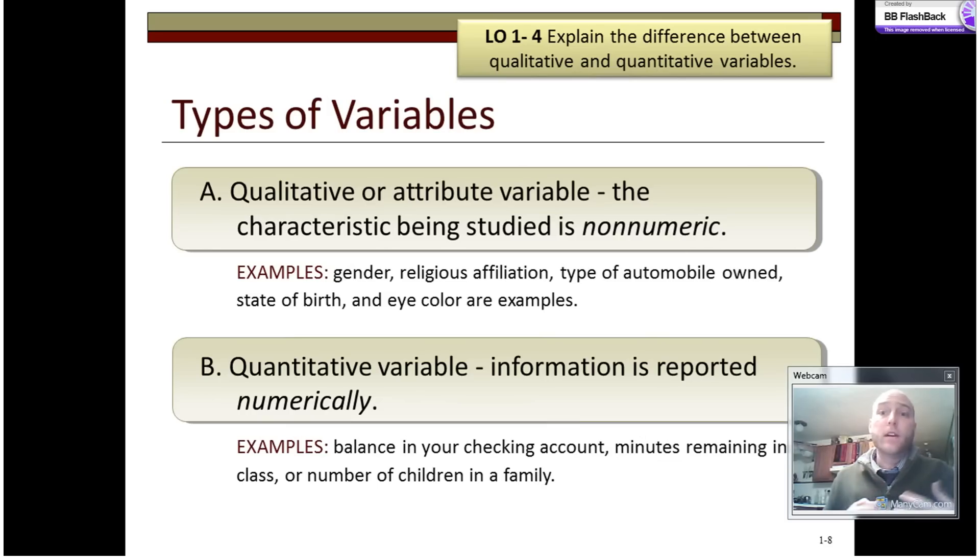The third thing that we're going to talk about is the difference between qualitative and quantitative variables. A qualitative or attribute variable is non-numeric. It's a description like gender, religious affiliation, type of automobile, etc. What we're not saying is that it's a certain number or amount of something. For example, a quantitative variable, which sounds like quantity as qualitative sounds like quality. A quantitative is information that's reported numerically. How much money you have, how many minutes are left in class, how many children there are in a family. All of those things are quantitative because they are quantities. Now if I want to describe the quality of something, I could tell you about its different aspects without necessarily having to count the things about it.